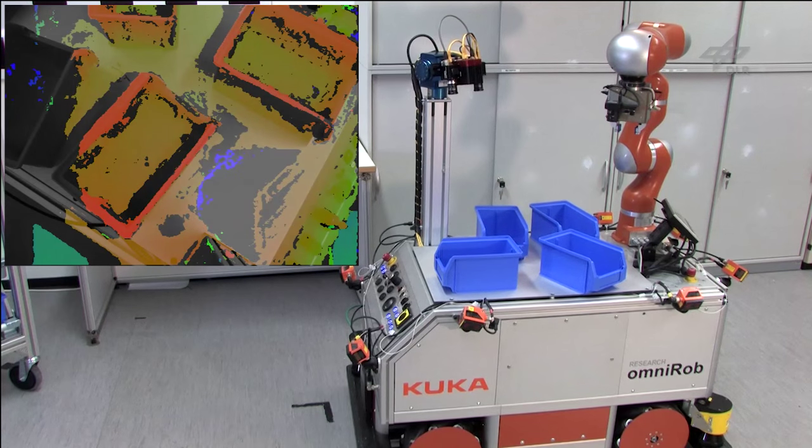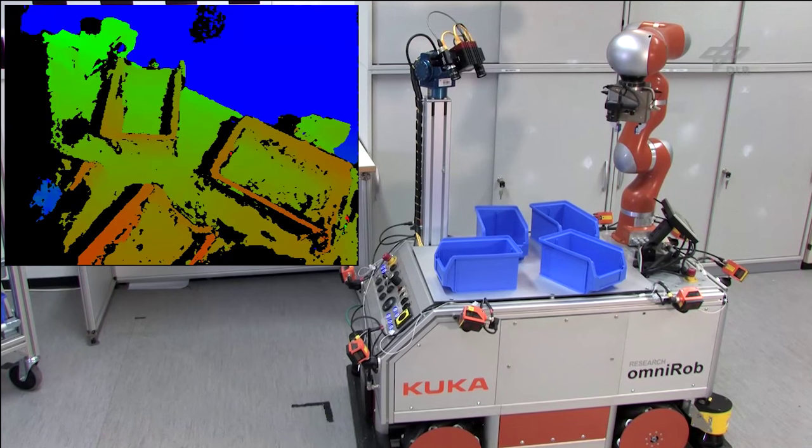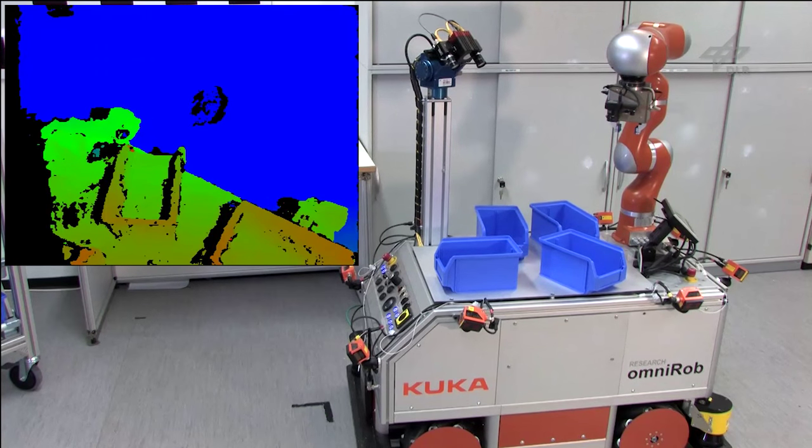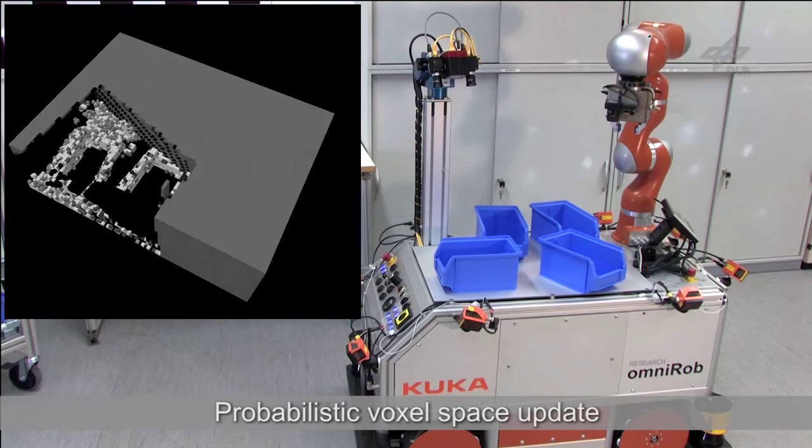Here we see the depth images as generated by the semi-global matching approach. Based on the depth images, a probabilistic voxel space, which is initialized with the state unknown, is updated.